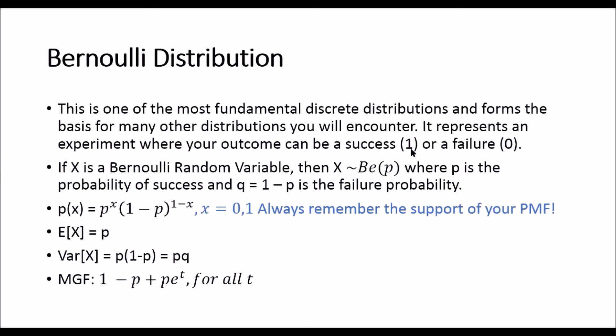So if a head is a success, that means a tail is a failure. And if a coin is a fair coin, that means that the probability of flipping a head or a tail are both equal. That means that p is equal to a half, and thus q, which is 1 minus p, is also a half. Then we say that the outcome of this coin flip, or the number of heads that we flip in this one coin flip, is distributed as a Bernoulli random variable with probability of success equal to a half.